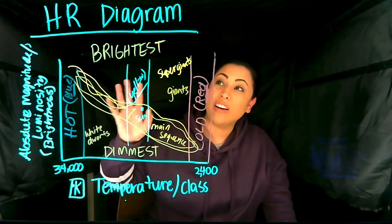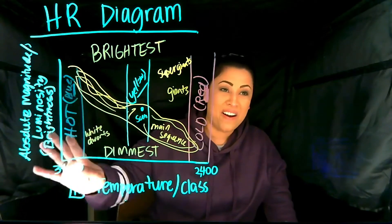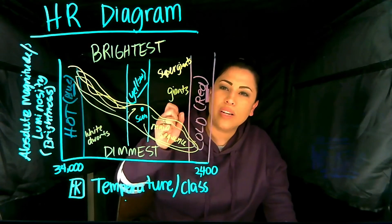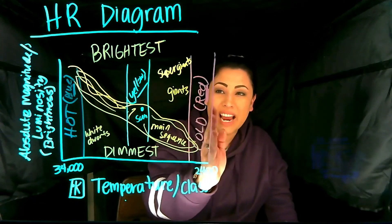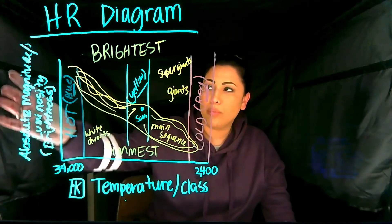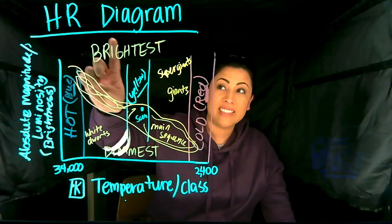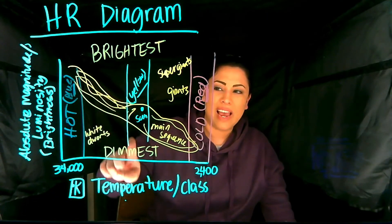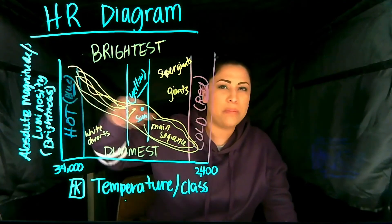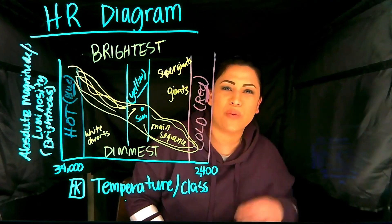So where are the hottest stars? Over here in the blue area. And where are the coolest stars? They're going to be on this side of the diagram — pay attention to the numbers. Brightness is measured on the y-axis: the brightest stars are at the very top and the dimmest are at the bottom. I hope that helped you understand the HR diagram a little bit more. If you have any questions, let me know — we'll see you next time, thanks for watching.